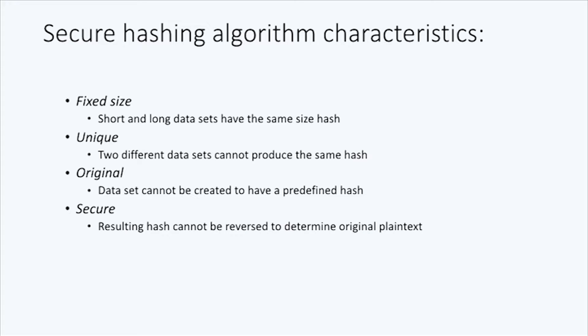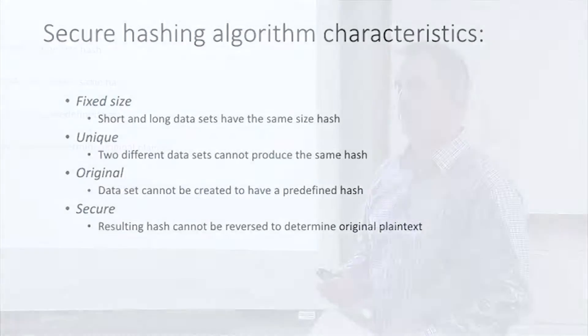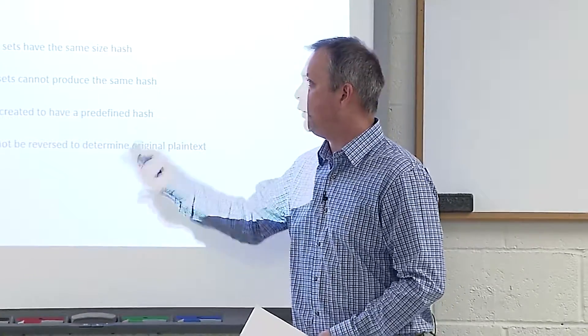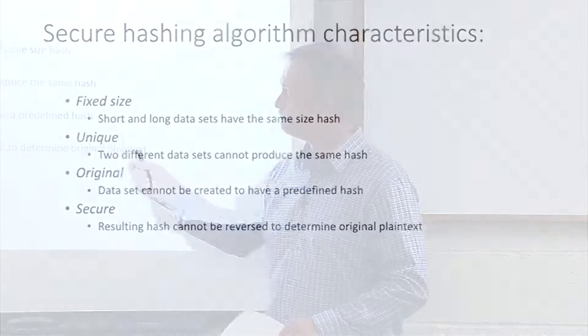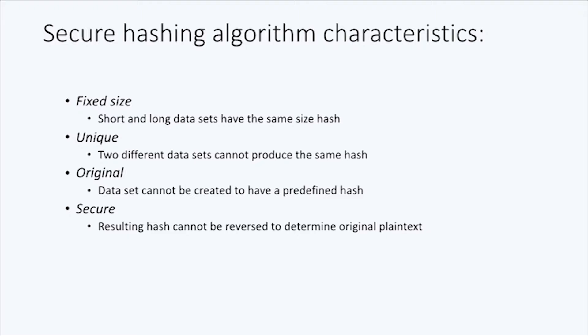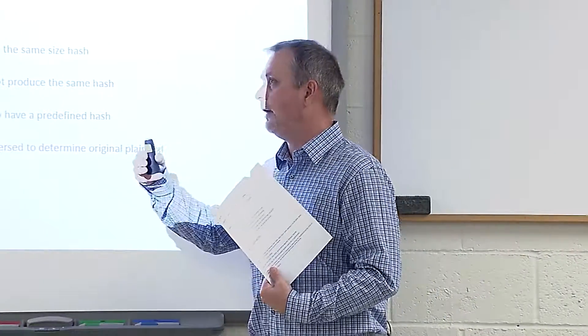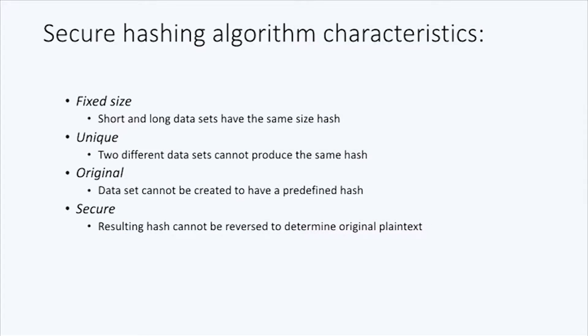A secure hash algorithm has some unique characteristics. First, it has a fixed size — both long and short data sets produce the same resulting hash size, the same number of characters in the hash value, whether you start with two characters or a hundred. They are unique, meaning two different data sets cannot produce the same hash value; when that happens, we call it a collision. They have to be original, meaning data sets cannot be engineered to have a predefined hash value. And finally, they must be secure, meaning the resulting hash value cannot be reversed or re-engineered to determine the original plain text.